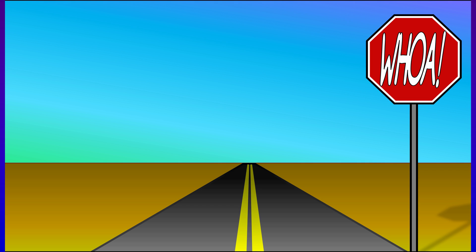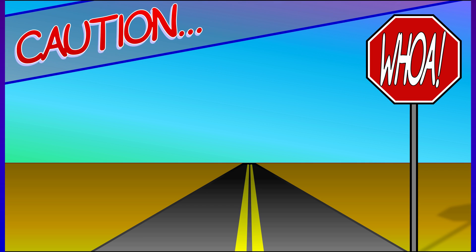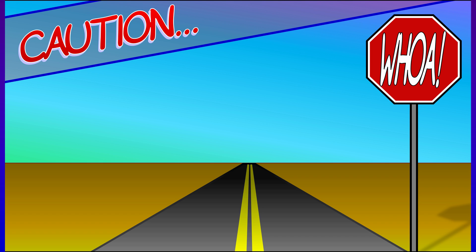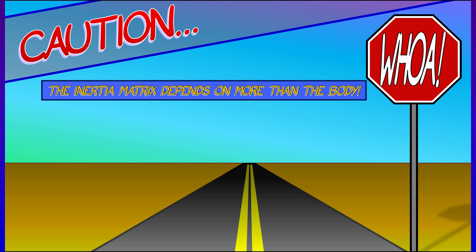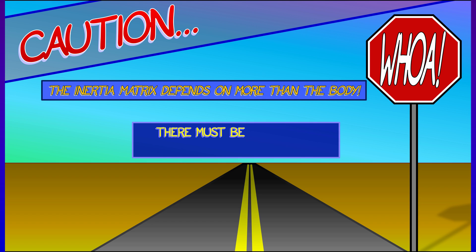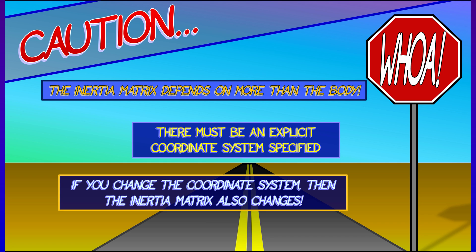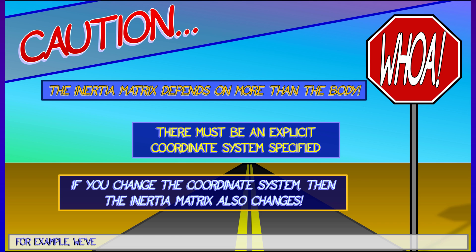Be careful. Don't fall into the mistake of thinking that the inertia matrix is only dependent on the body. You've got to have a coordinate frame specified. If you change the coordinate frame, the inertia matrix totally changes. Remember the parallel axis theorem? That means that when you translate the coordinate frame, the moments of inertia are different.